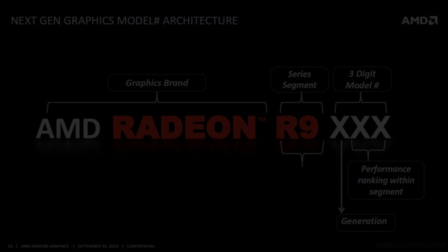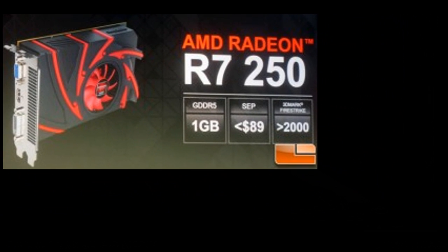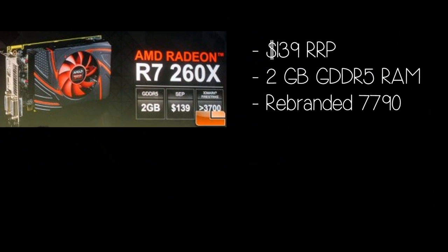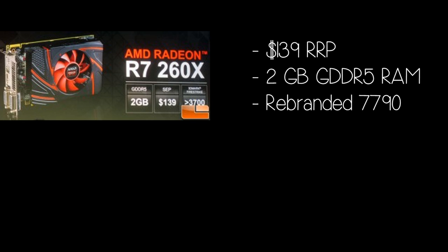Getting to the actual graphics cards they plan on releasing: first we've got the R7-250. This GPU has 1GB of GDDR5 RAM and it's coming in at $89 — pretty sweet deal for someone looking for entry-level gaming who doesn't want to spend too much. Next up is the R7-260X. This has 2GB of GDDR5 RAM and is essentially a rebranded 7790, which is pretty good. That comes in at $139.